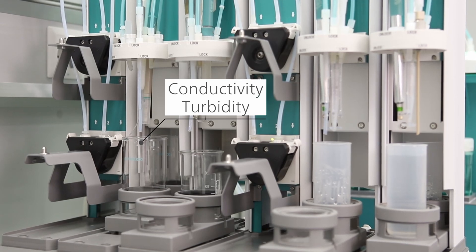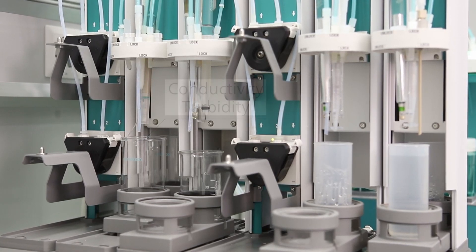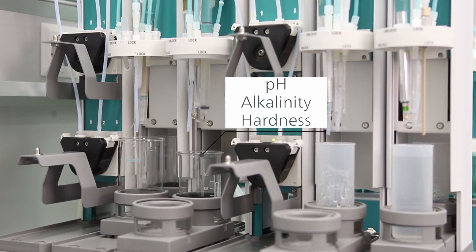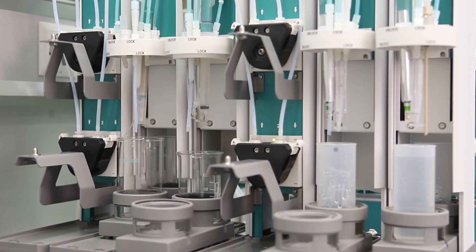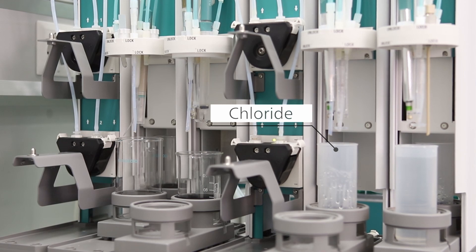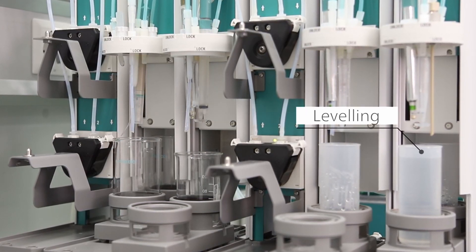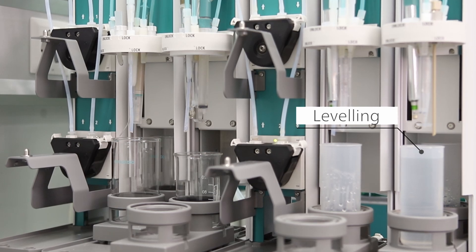The first workstation is for the conductivity and turbidity measurement. The second one is for the pH measurement as well as the determination of alkalinity and hardness, and the third one is for chloride determination. The last workstation is used separately for levelling purpose.